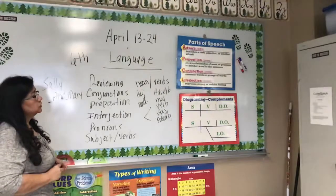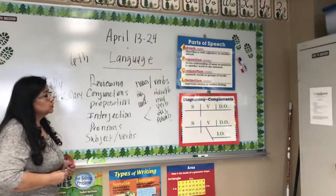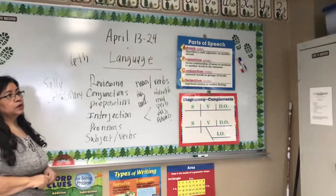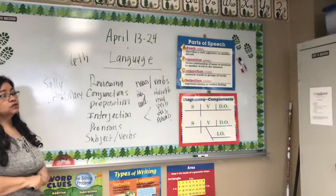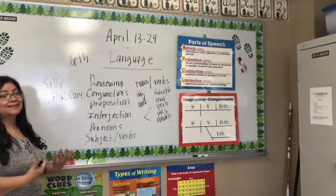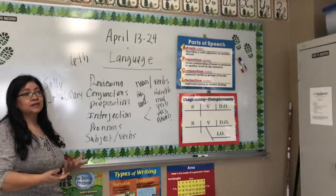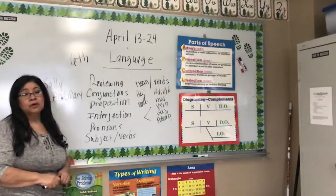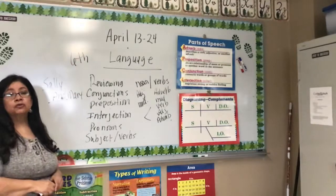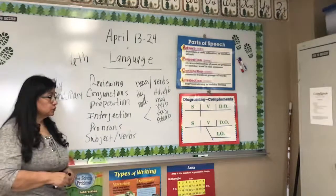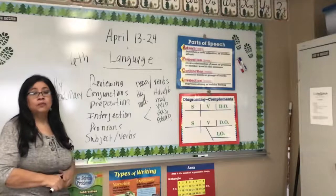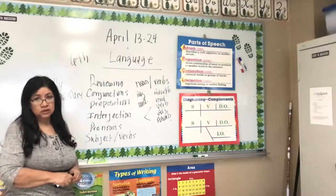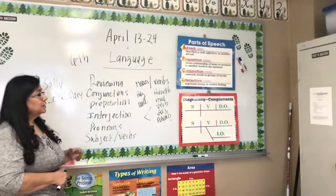Your interjections are expressing strong feeling. Remember, an interjection is something that somebody is saying excitedly. For example: 'Wow, did you see that big boat?' or 'Hey, we're over here.' Those are all interjections, and we want to be able to distinguish what an interjection is when we're reading sentences.